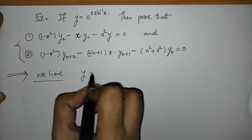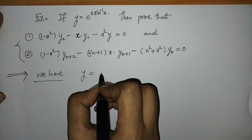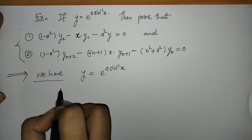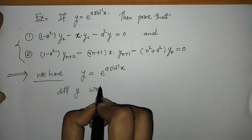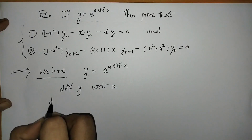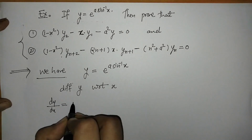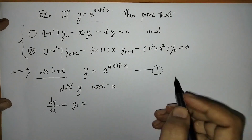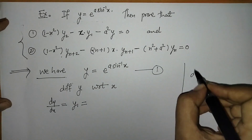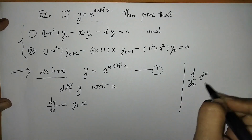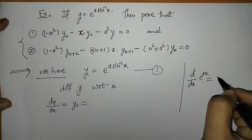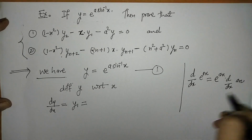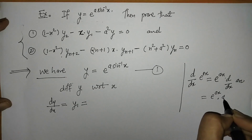First, here we write down what we have given: y is equal to e raised to a·sin⁻¹x. Now we have to differentiate this y with respect to x to get the first derivative y1. This is of the form e^(ax), and we know its derivative is e^(ax) multiplied by a.